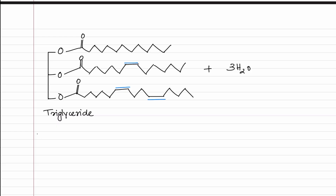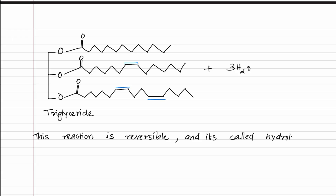This reaction is reversible. Triglycerides can be used to form glycerol and three fatty acids, and that process is called hydrolysis. Water is used to cut — that is what hydrolysis means. So that is all for triglycerides and their structure.